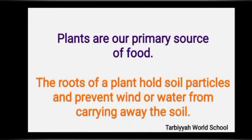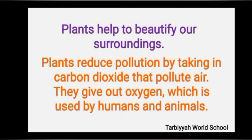Plants are our primary source of food. The roots of a plant hold soil particles and prevent wind or water from carrying away the soil. Plants help to purify our surroundings by taking in carbon dioxide that pollutes air, and they give out oxygen which is used by humans and animals.